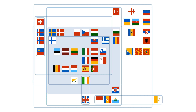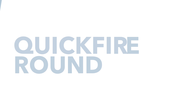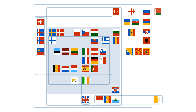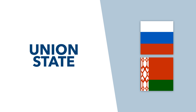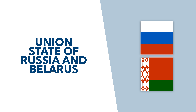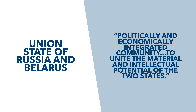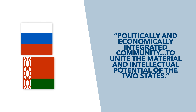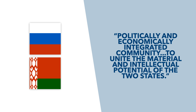So that brings our total flags up to 48. Let's get to a nice round 50 and then do a quick fire round. Belarus enters the diagram thanks to its connection to Russia via the Union State. The Union State of Russia and Belarus is an international organisation with the aim of creating a politically and economically integrated community, to unite the material and intellectual potential of the two states.